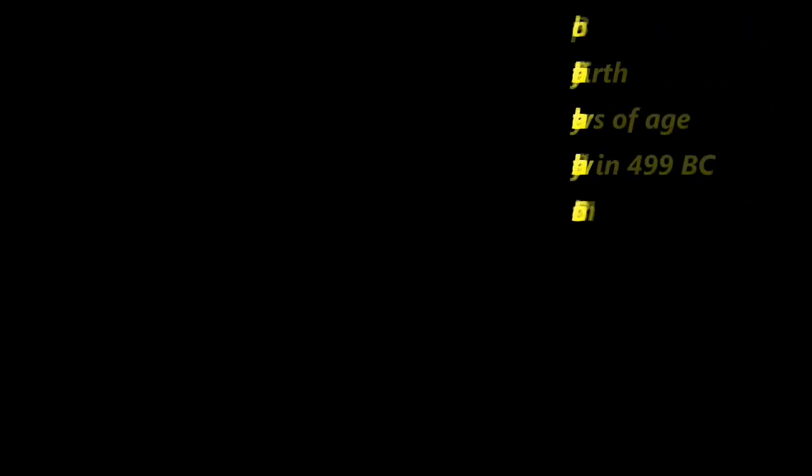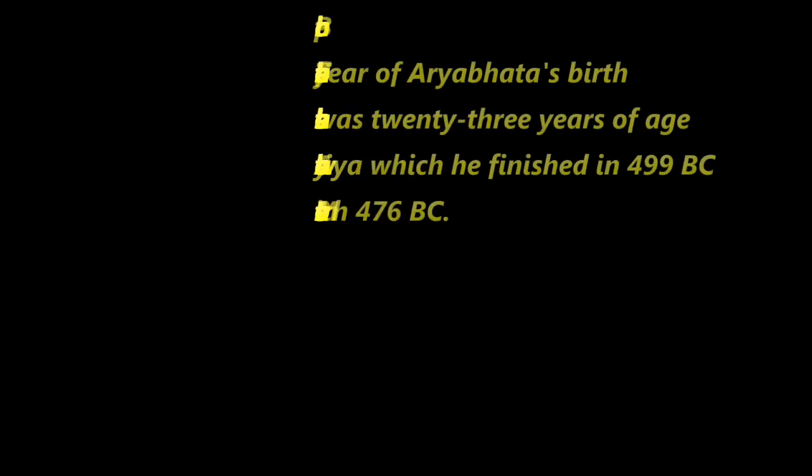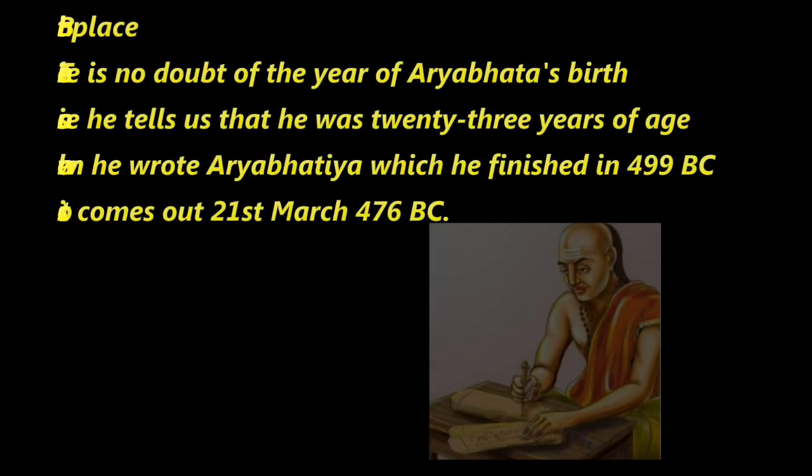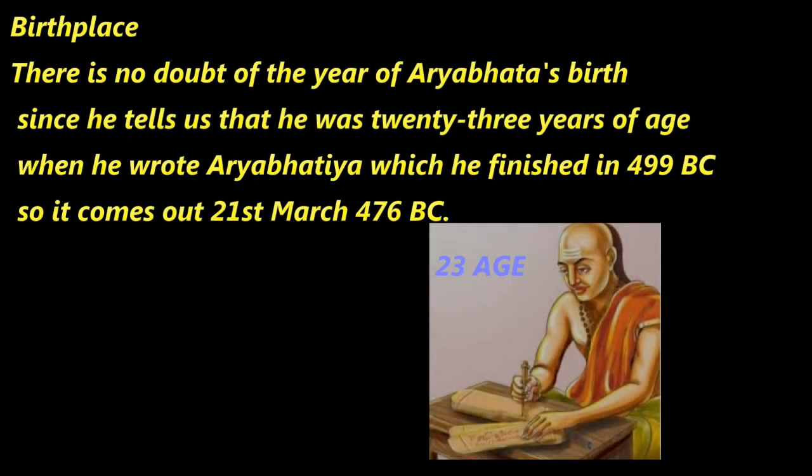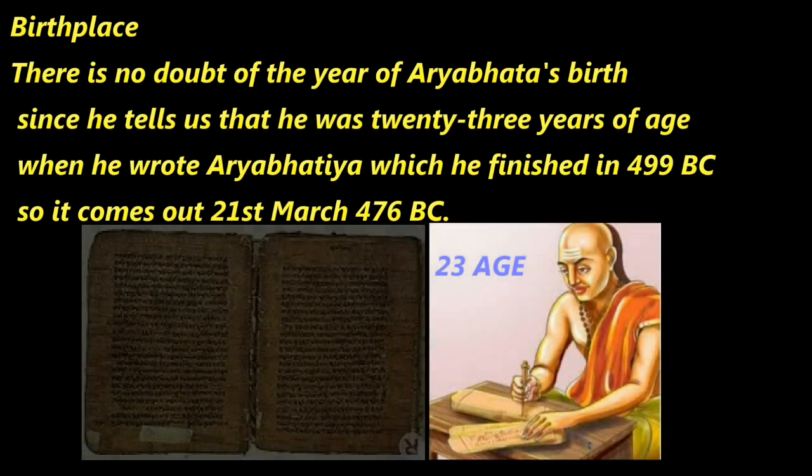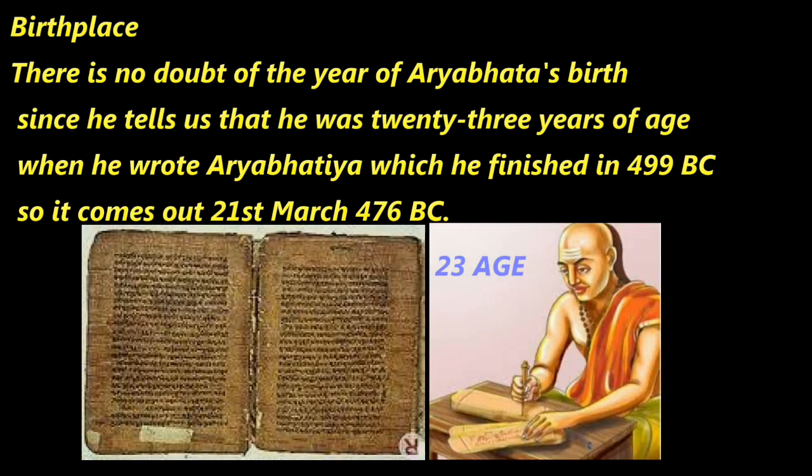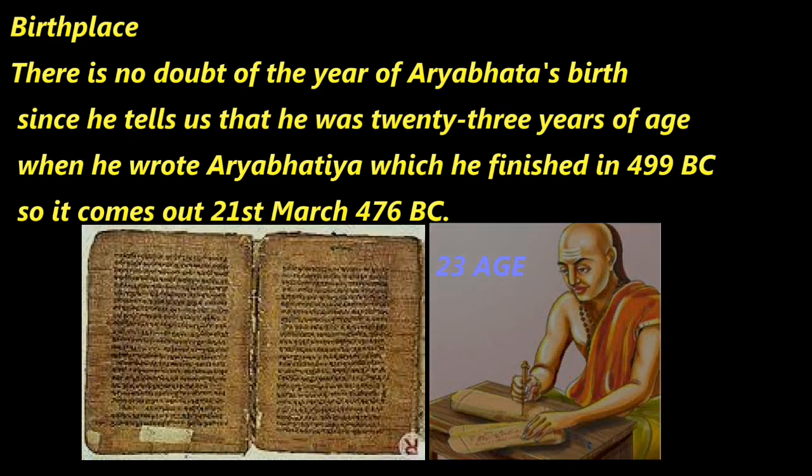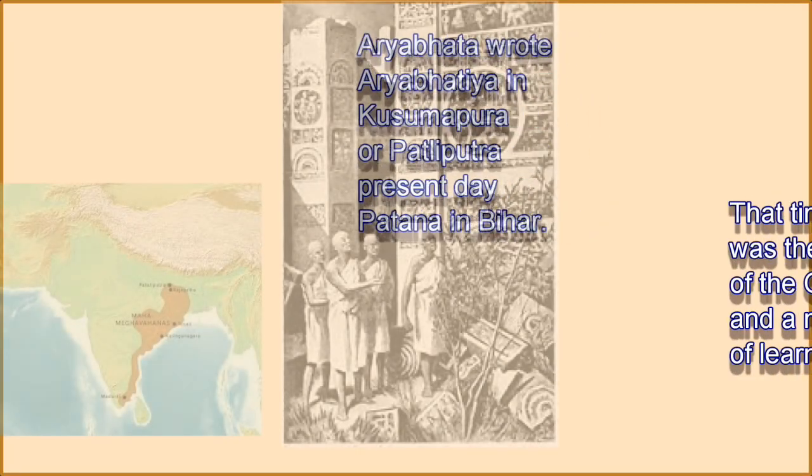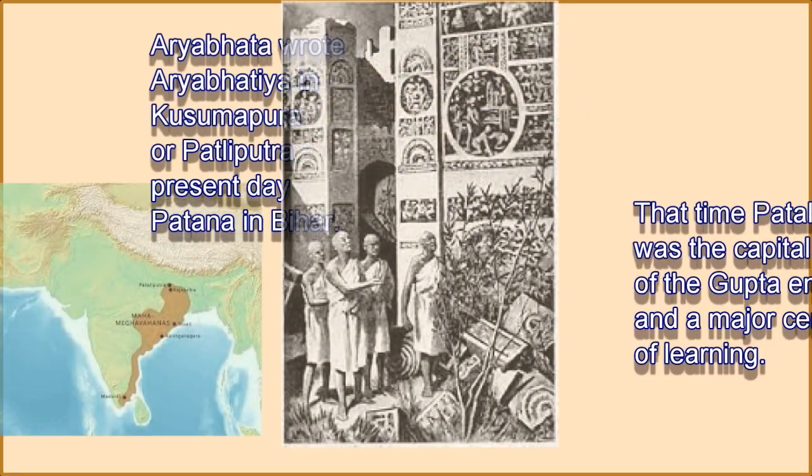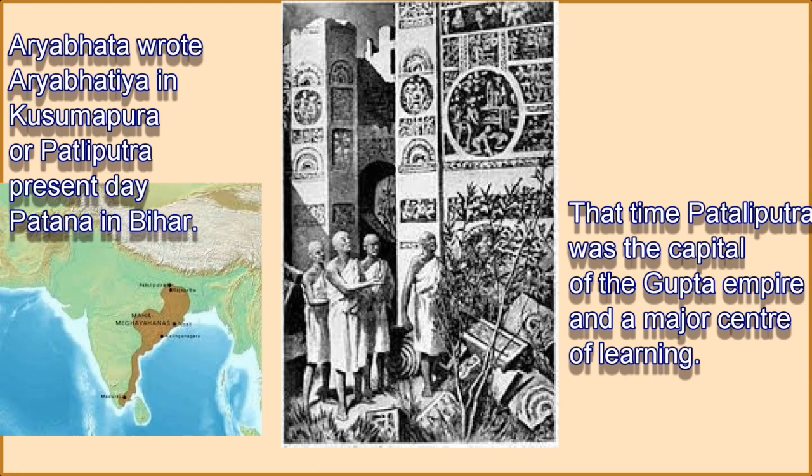There is no doubt of the year of Aryabhata's birth since he tells us that he was 23 years of age when he wrote Aryabhattiya, which he finished in 499 BC, so it comes out 21 March 476 BC. Aryabhata wrote Aryabhattiya in Kusmapura or Patliputra present day Patna in Bihar.